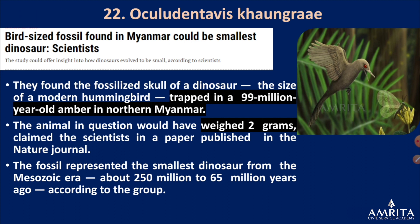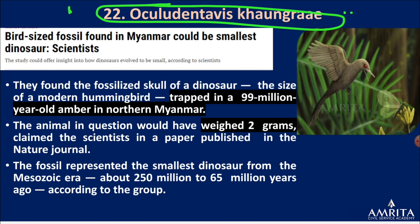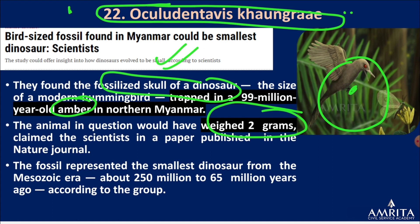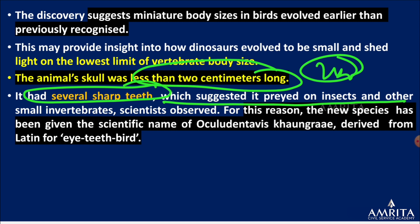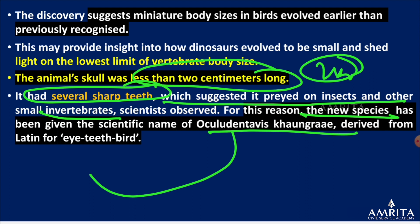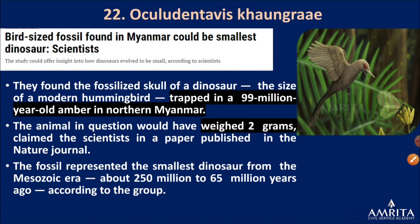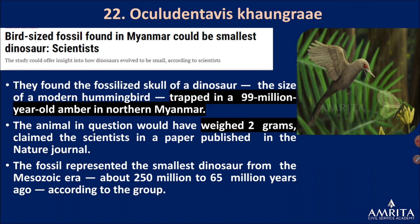Last is Oculudentavis khaungraae — a world-sized fossil of a bird found in amber. Amber is fossil resin in which this creature was preserved. The skull has been found — it was around two grams in weight and two centimeters long. Its sharp teeth suggest it preyed on insects and other small invertebrates, which is why it was named Oculudentavis, meaning 'eye-teeth bird'.